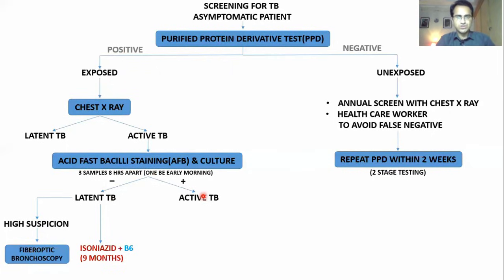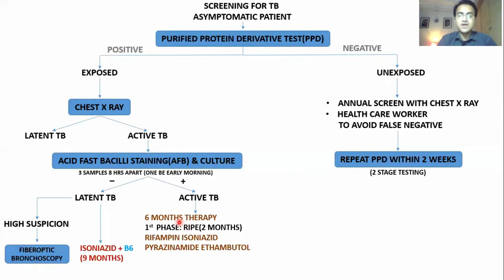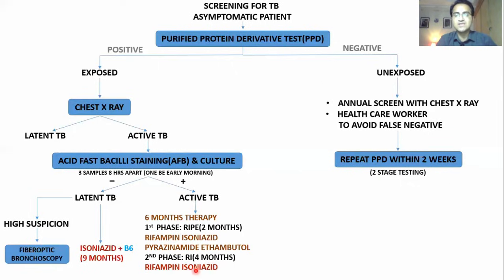If the patient has active TB, you treat with a six-month therapy divided into two phases. The first phase is two months with RIPE: Rifampicin, Isoniazid, Pyrazinamide, and Ethambutol. The second phase is four months with only Rifampicin and Isoniazid. Six-month therapy total: first phase RIPE, second phase RI.